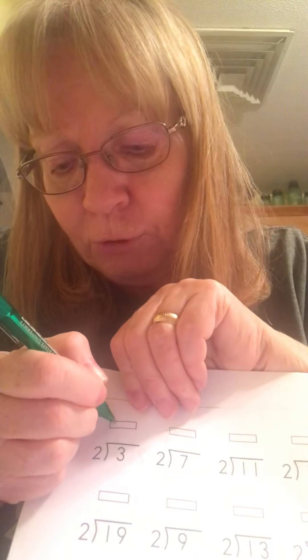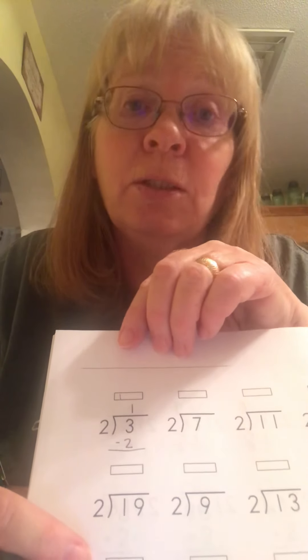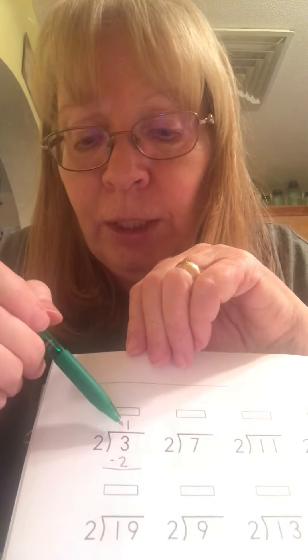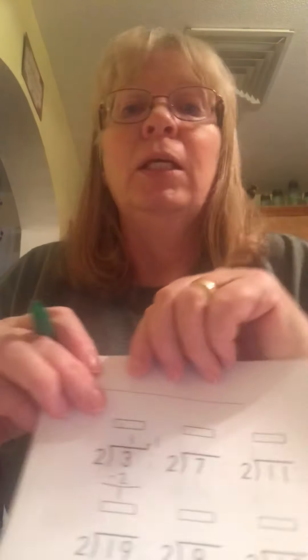So if I look at this — 3 divided by 2. If I count by 2's, I have 2. If I put 1 more, that's 4, and that's too much. So I'm just going to put the 1 up here above the 3. Then under the 3, 2 times 1 is 2, so 2 goes underneath. And then I subtract — 3 minus 2 is 1. So 1 goes there, which means we have a remainder of 1. Any time there's a number down here, that's your remainder.